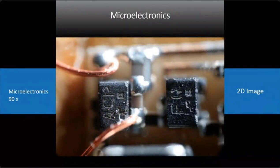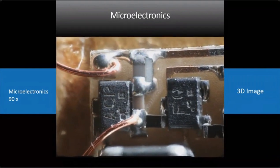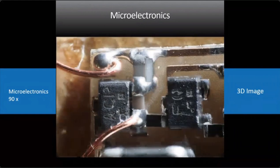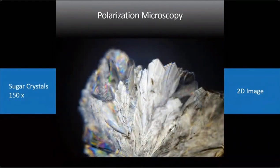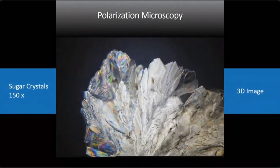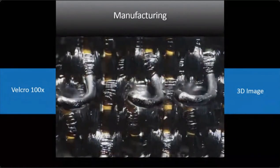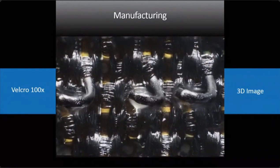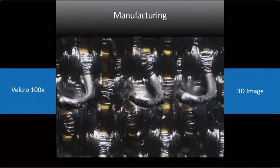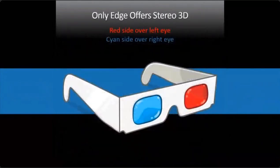In microelectronics, this is what you see with your 2D microscope, and now upgraded you can clearly see what's happening from top to bottom. It also works in polarization microscopy — here's a 2D picture of a sugar crystal crystallizing, and now it is in 3D. This is velcro: for manufacturing, it's really good to see it in 3D — those little hooks get caught up in the loops of the velcro, and that's how velcro works.